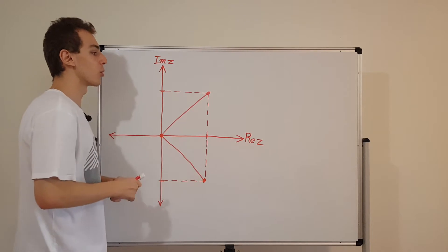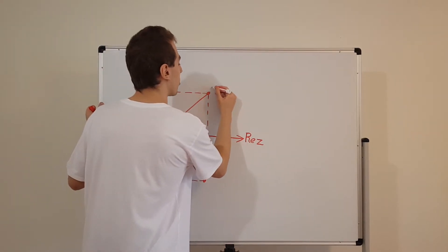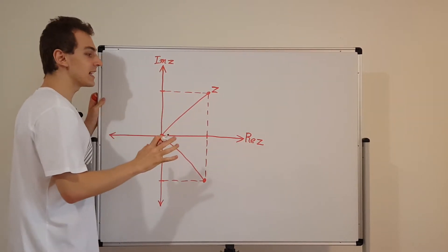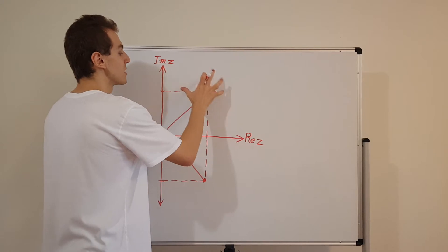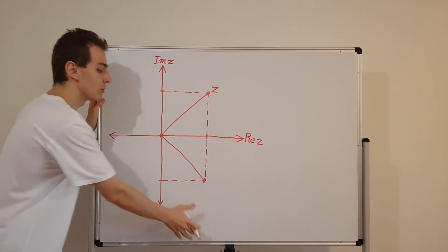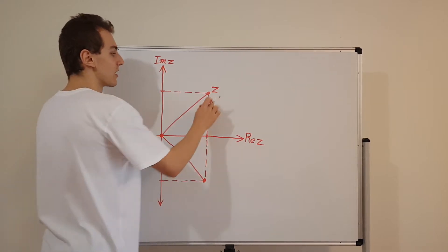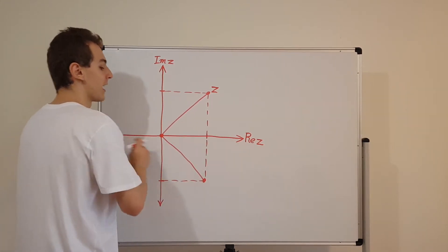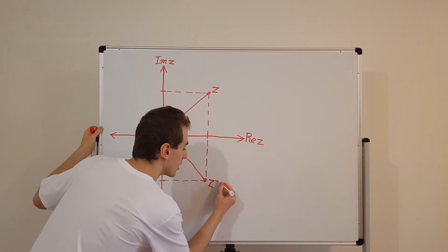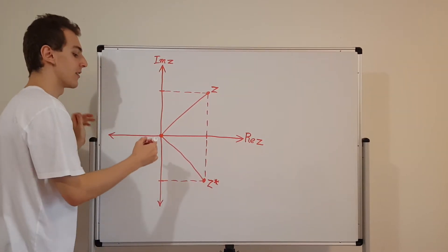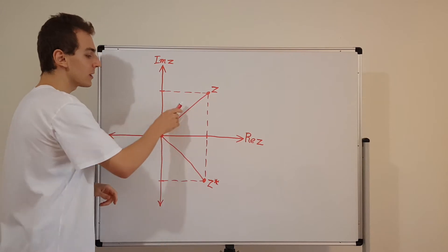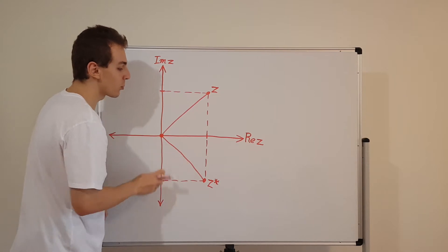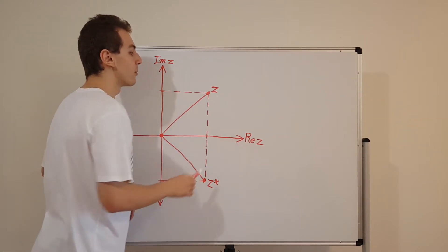This point over here I'm going to call z — this is your complex number. So z sits somewhere on the complex plane. I've put it somewhere in the upper right quadrant, but it could be anywhere on the plane. What we're going to do is take the complex conjugate of z, and that's going to give us the reflected version — that's this point down here, which I'm going to call z star. The star notation tells us it's a complex conjugate. The complex conjugate is the reflected version over the real axis — we're taking the imaginary component and negating it.